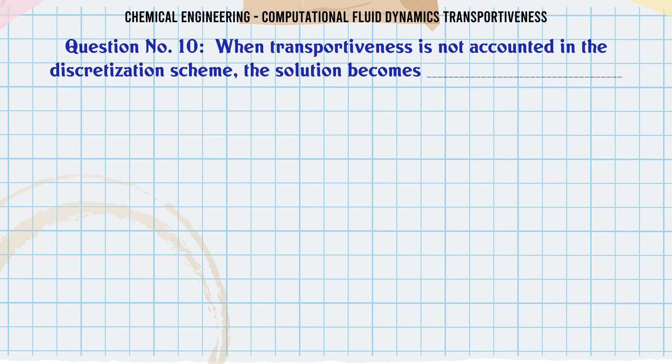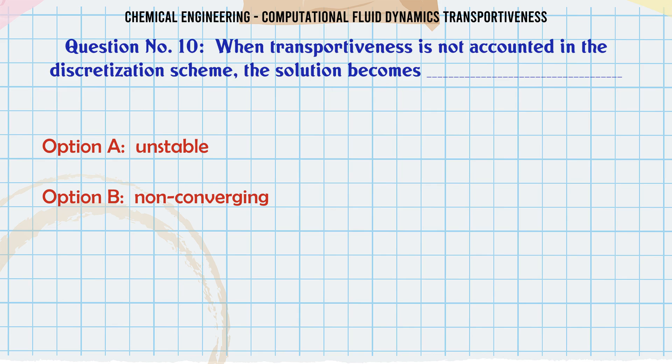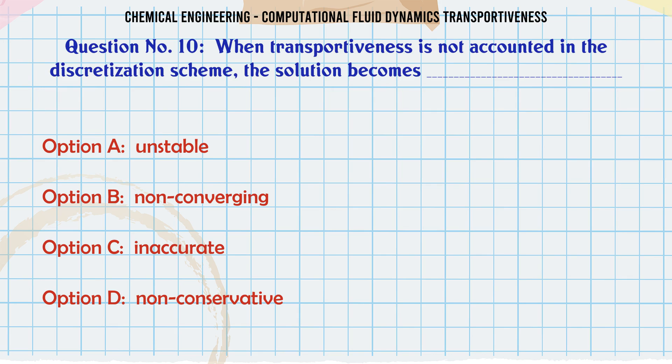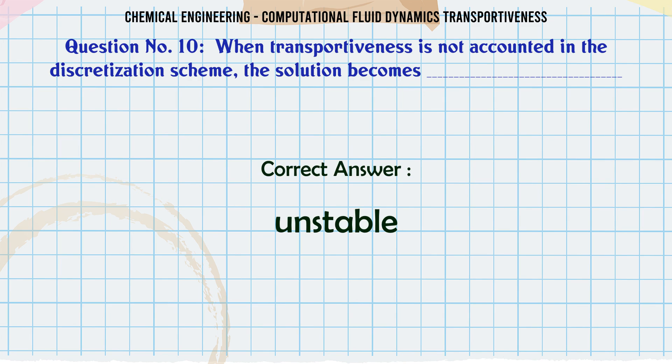When transportiveness is not accounted for in the discretization scheme, the solution becomes: A. Unstable. B. Non-converging. C. Inaccurate. D. Non-conservative. The correct answer is unstable.